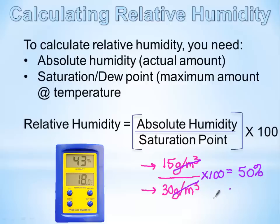When we reach 100% relative humidity, we're going to have some form of precipitation — whether it's rain, snow, sleet, or hail.